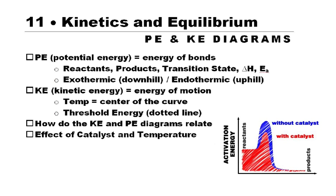This is a quick review of the potential energy and the kinetic energy diagrams. Some people have a little confusion with those. This over here is kind of an example of a potential energy diagram. We'll start with the reactants and go to the products. Of this kind of picture, there are five things you should know about.